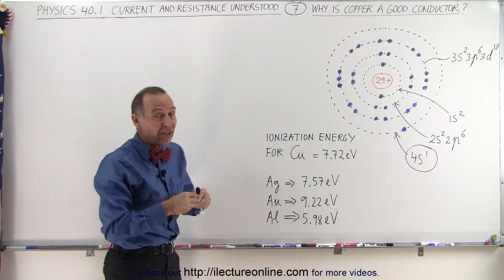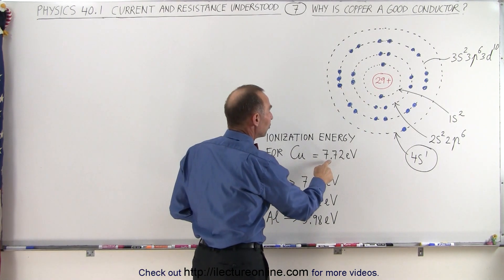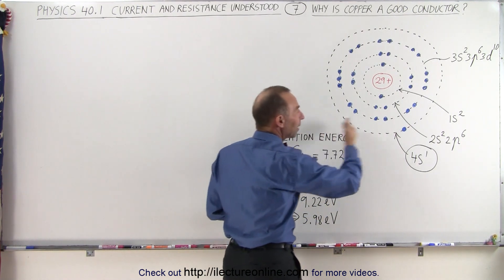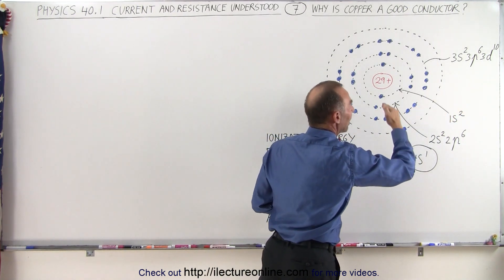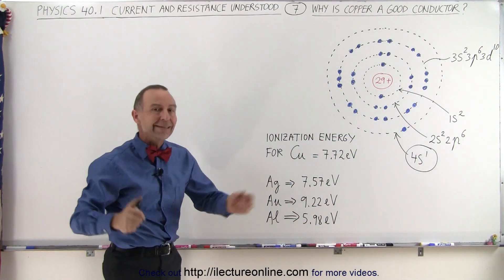And since it's there all by itself, it's actually quite readily removed. The ionization energy is 7.72 electron volts, which isn't a lot. So a small amount of force can knock that electron out and make it move from one atom to the next inside a conductor.